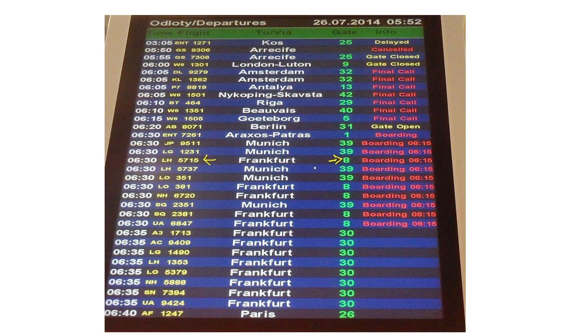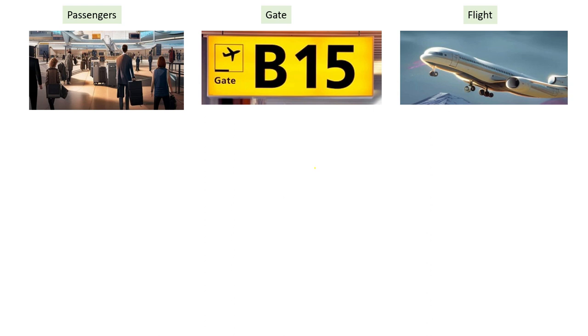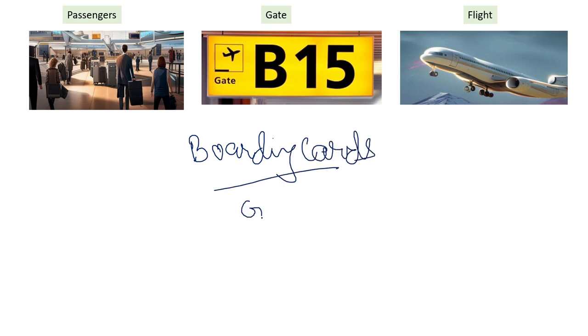How does this map to ports? We have passengers, and different passengers are going to take their flights. We have flights going to different destinations, and we also have gates — there are many gates depending on the airport. Passengers are routed to different gates for their flights. This information is on their boarding card, and from there they know which gate they have to go to.